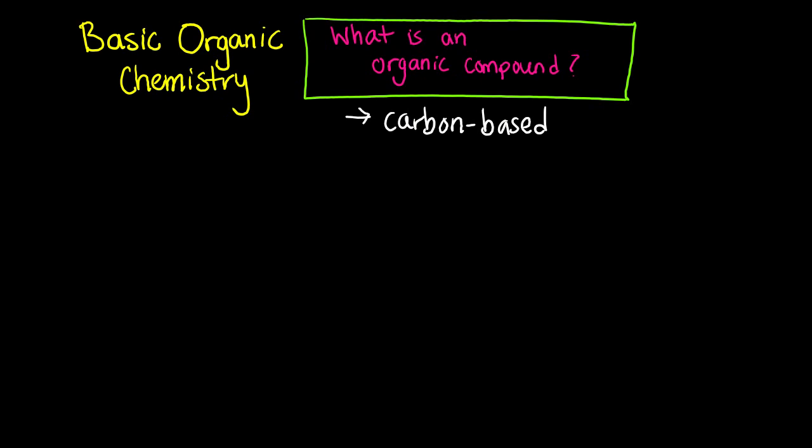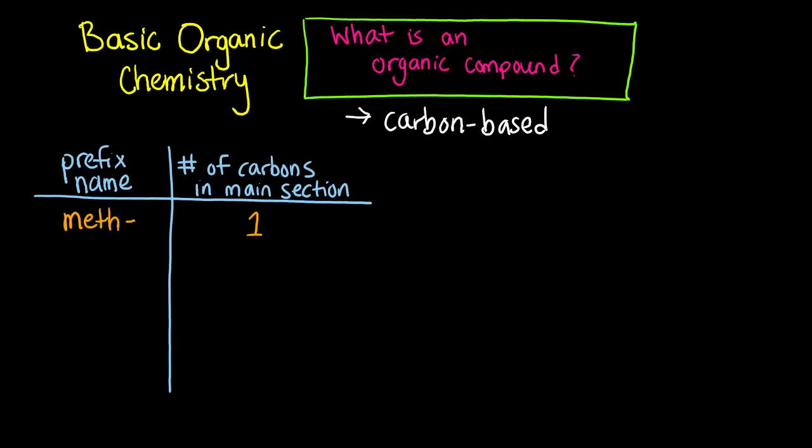A carbon-based compound has some prefixes that can help you determine how many carbon atoms are in the molecule. The prefix meth means one carbon. The formula for methane, for example, is CH4. The prefix eth means two carbons, so the formula for ethane is C2H6.